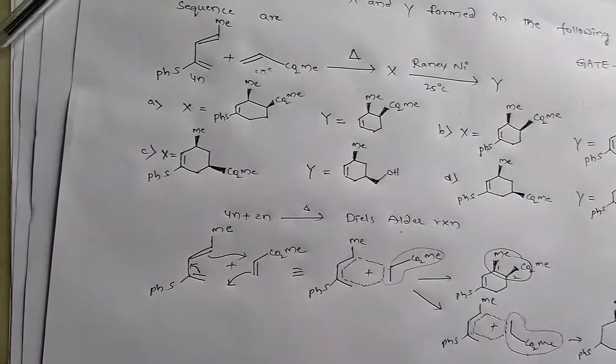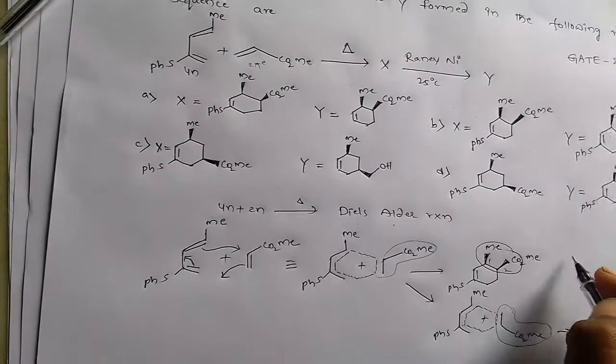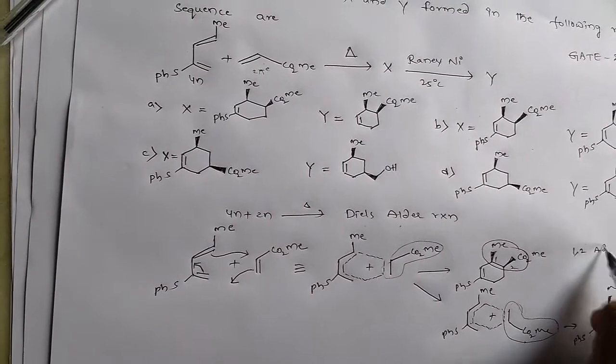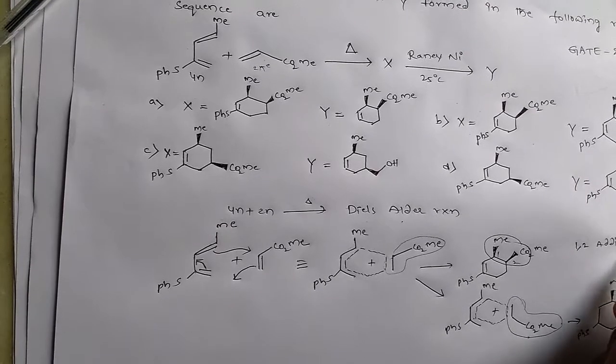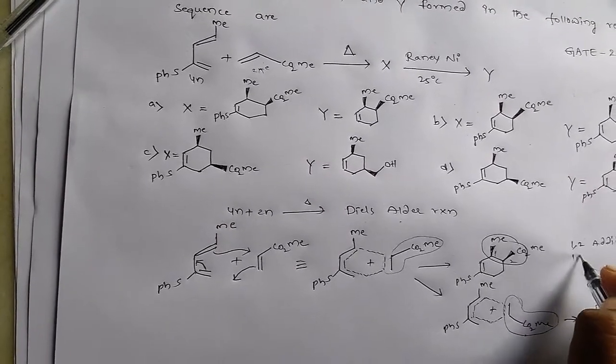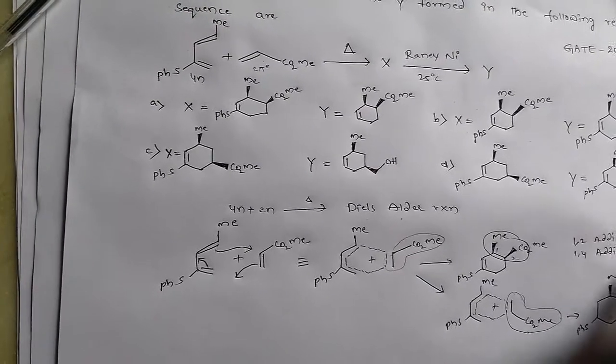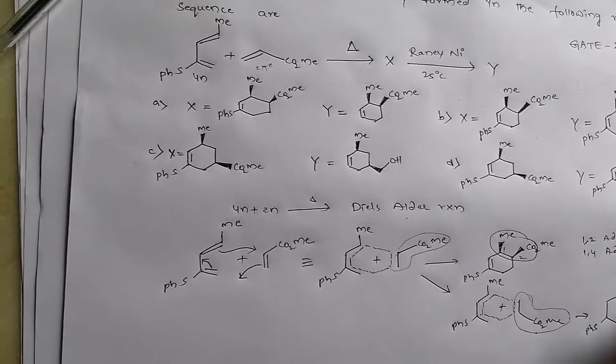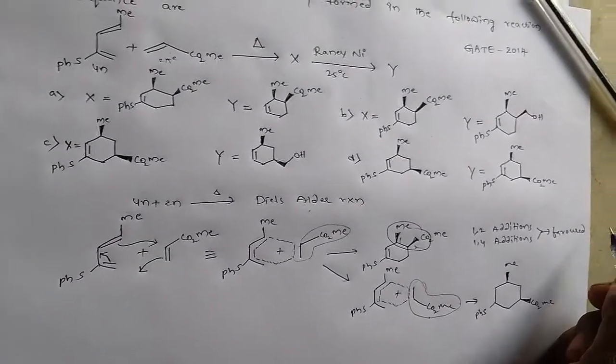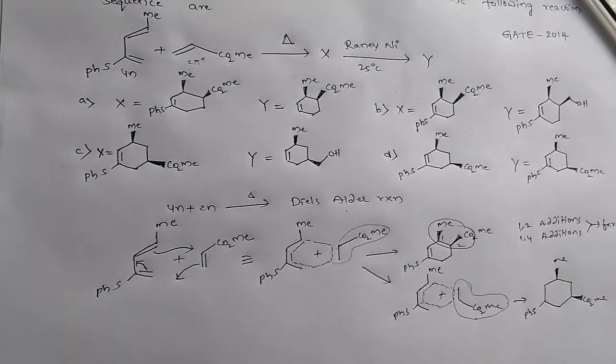But in Diels-Alder reaction, always 1,2 additions or 1,4 additions are favored. 1,4 additions are favored.